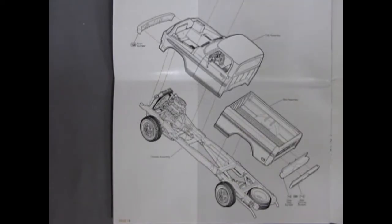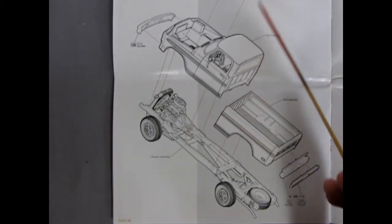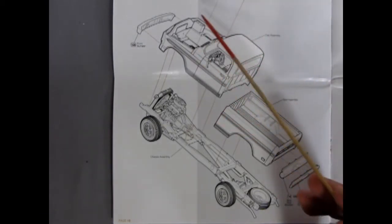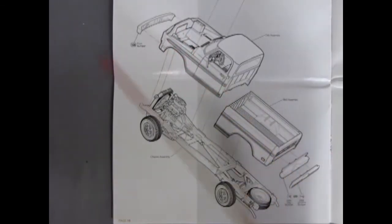Finally all our completed components attach to the chassis. So here we have a choice of a rear chrome bumper or a rear step bumper. Our bed drops on, our cab drops in place, our hood goes onto the top of our cab and then we get our front bumper.